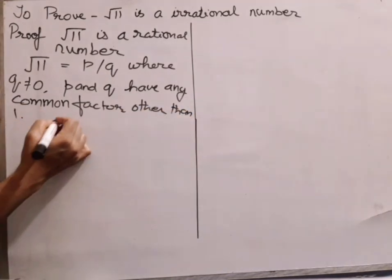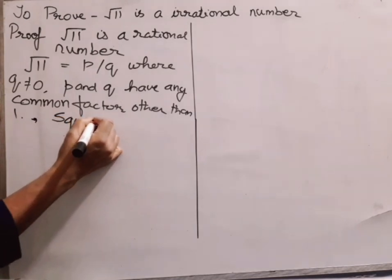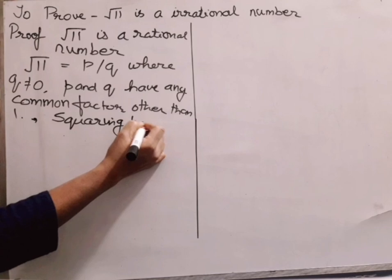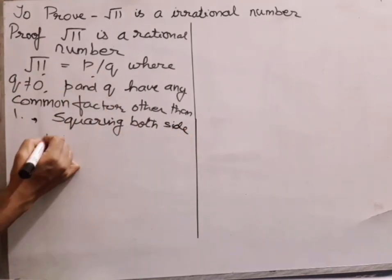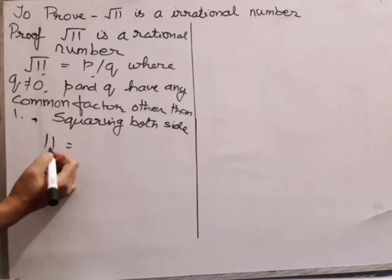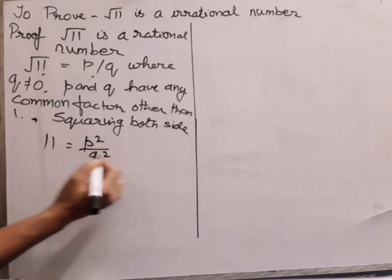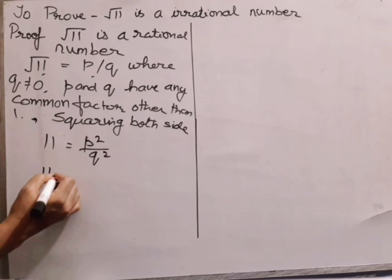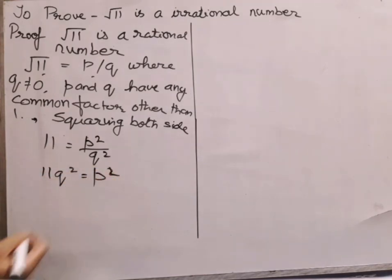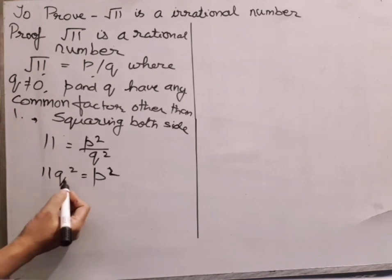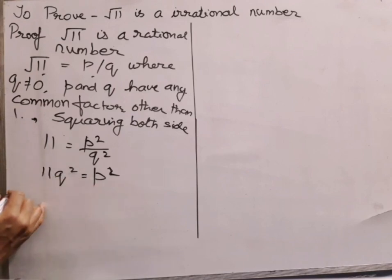Now, I am going to square both sides. When I take the square of both sides, I get √11 squared = 11, and P squared over Q squared. If I cross multiply, I can write it as 11Q² = P². Here, you can see that 11 is multiplied with Q², and I am getting P². It means 11 is a factor of P².